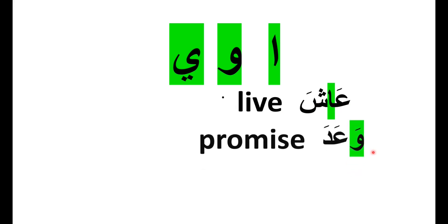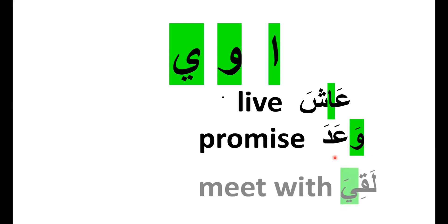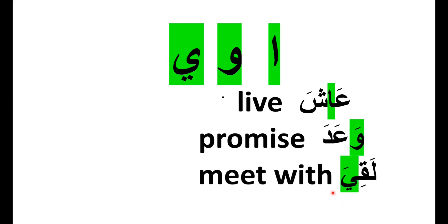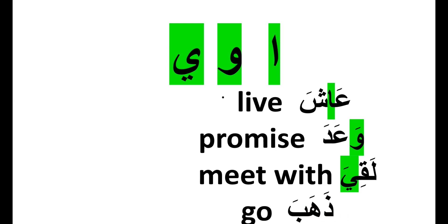Examples of the verb that carries a weak letter: عاش, live; وعد, promise; and لقي, meet with. A sound verb, الفعل الصحيح, does not have those three letters in its root. For example, ذهب, go.